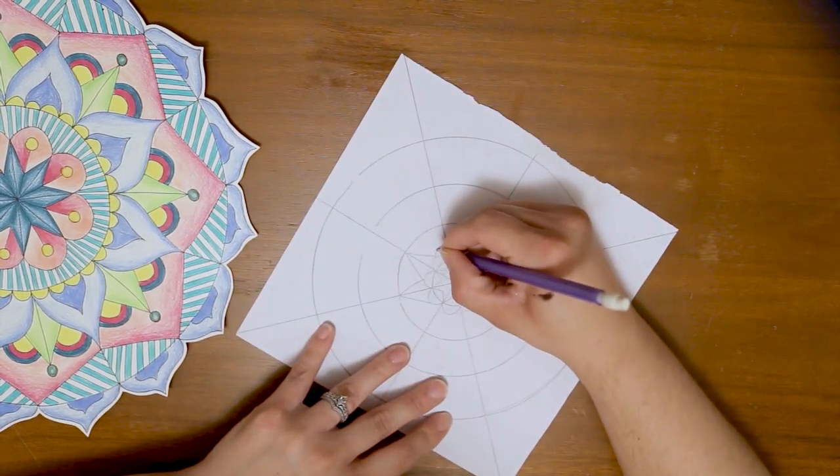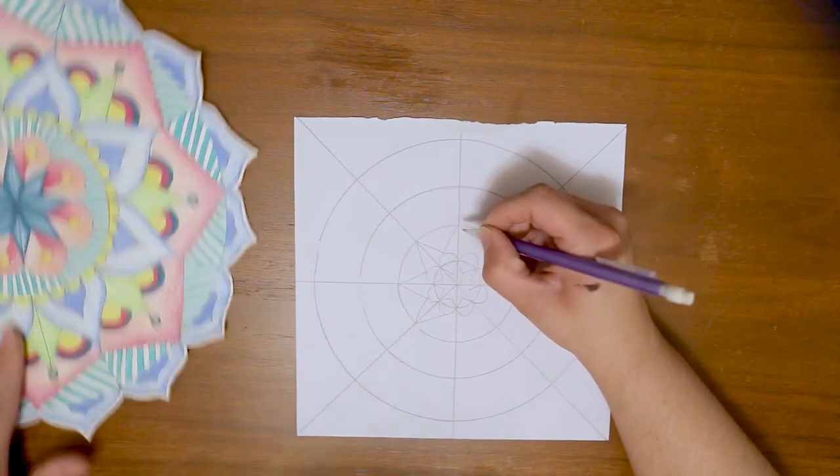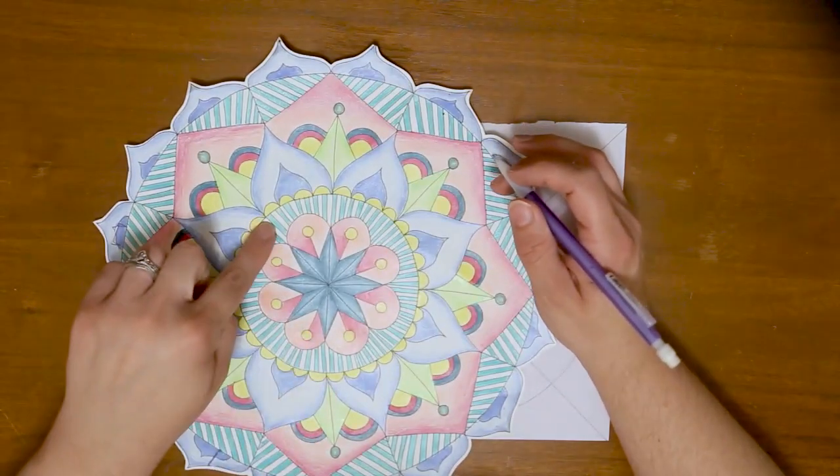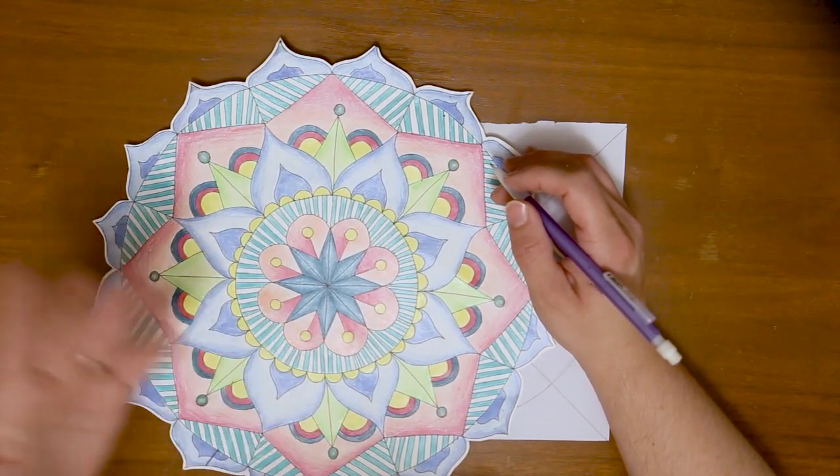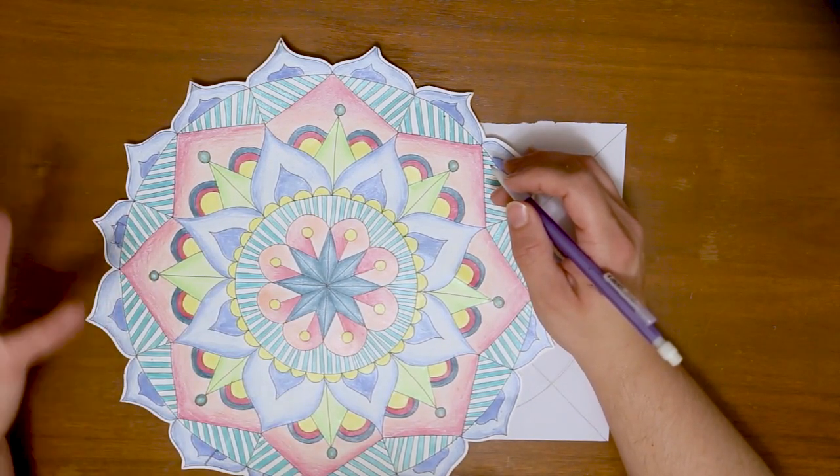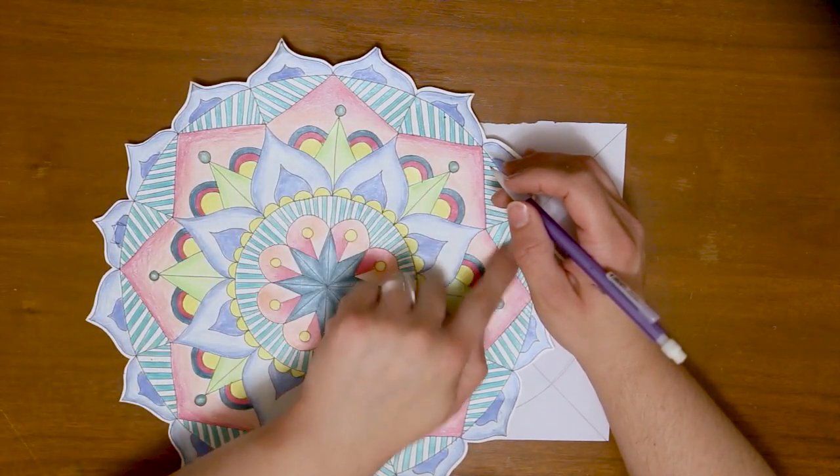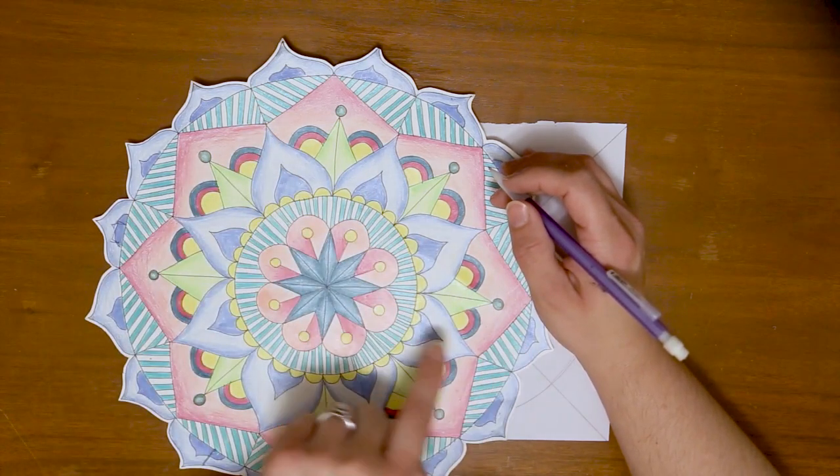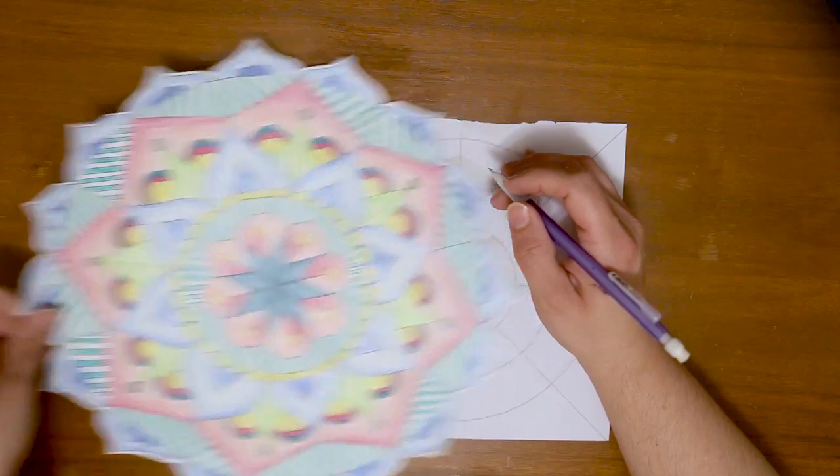I also like to start simple and then sometimes I go back in and add more details. For example, in the mandala that you see here, you can see areas where I added the stripes. Originally those were just an open area and I decided it needed a little bit of something extra. So I added those stripes in there around both those areas as well. The same thing with those double petals. Originally it was just one petal, but I felt like it needed a little something extra.